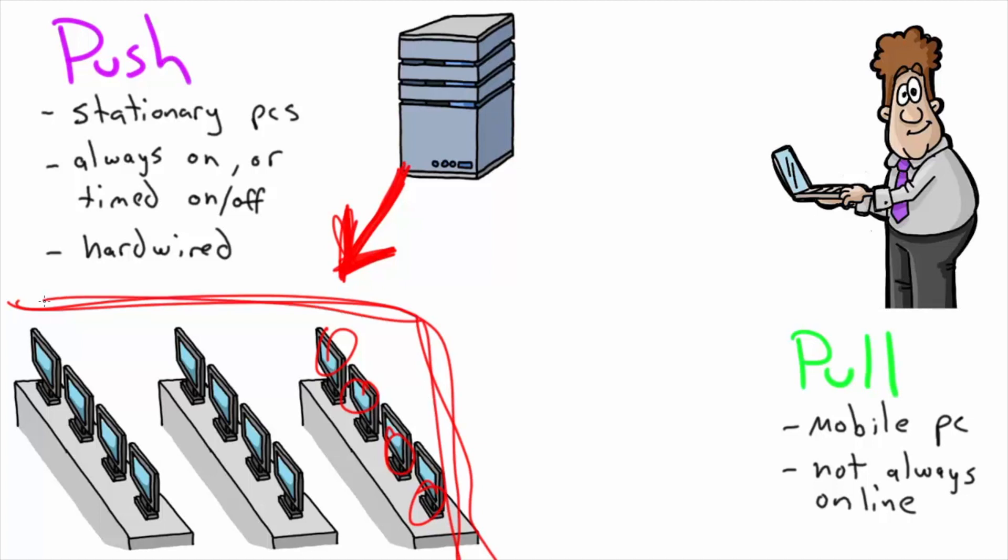But in this scenario, this guy has a laptop. He's not always here, not always on the network. Sometimes he works remotely, sometimes in the office. So it doesn't make sense for the server to try to push because he's not going to be there all the time. The server would try to push and say, 'Well, he's not even here. I can't send him any data.'